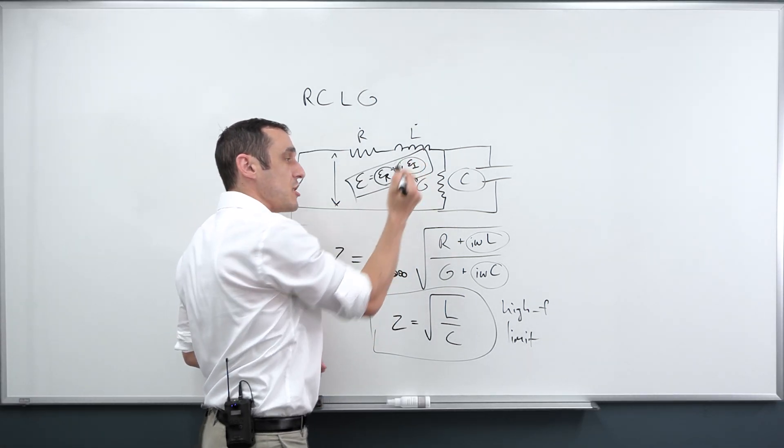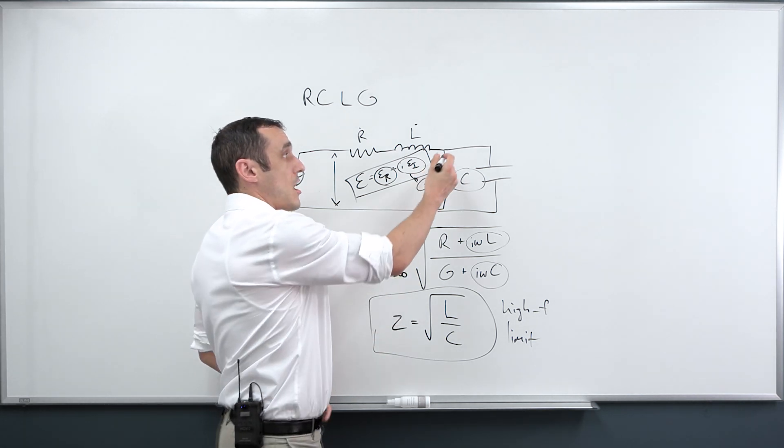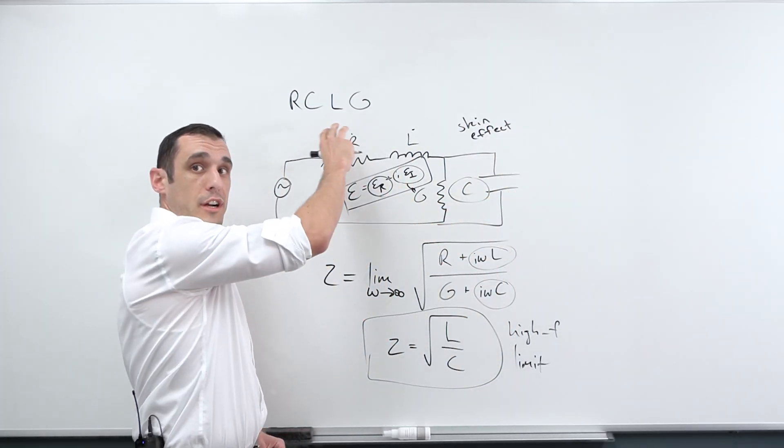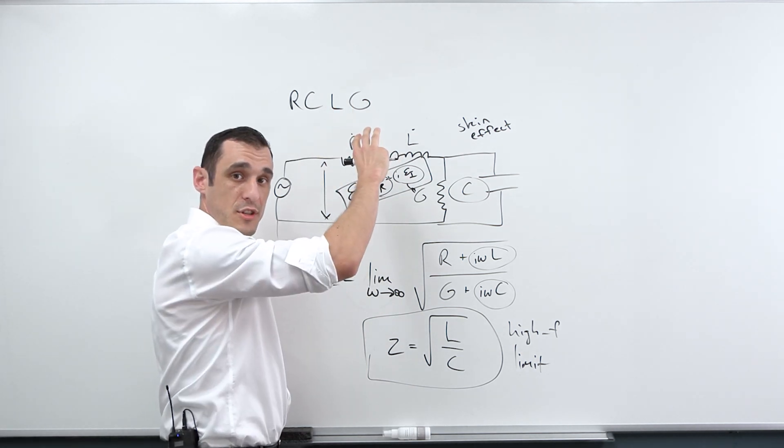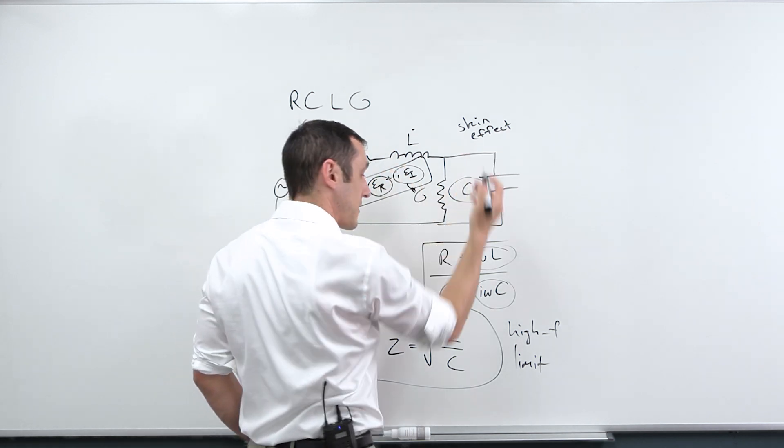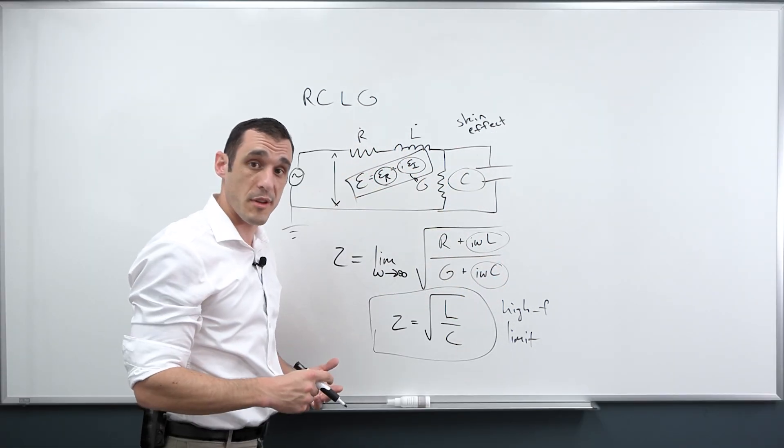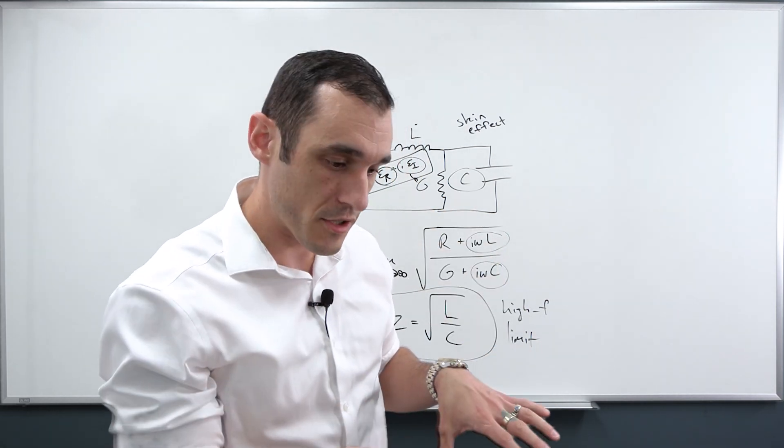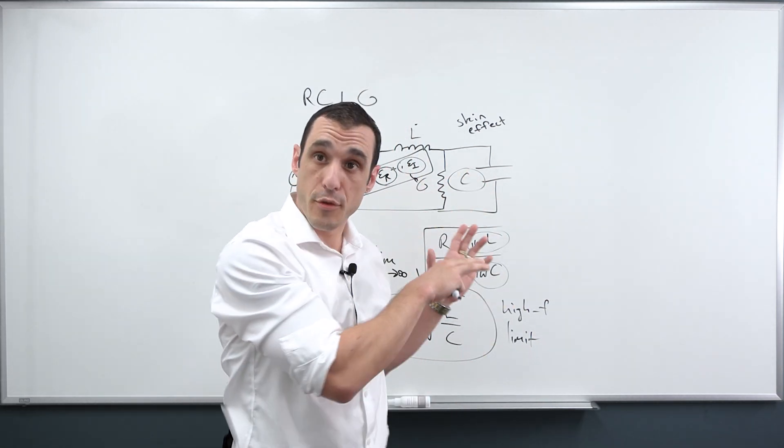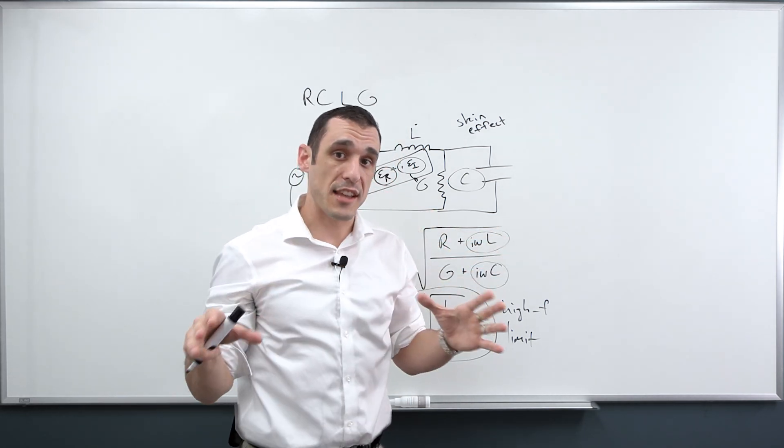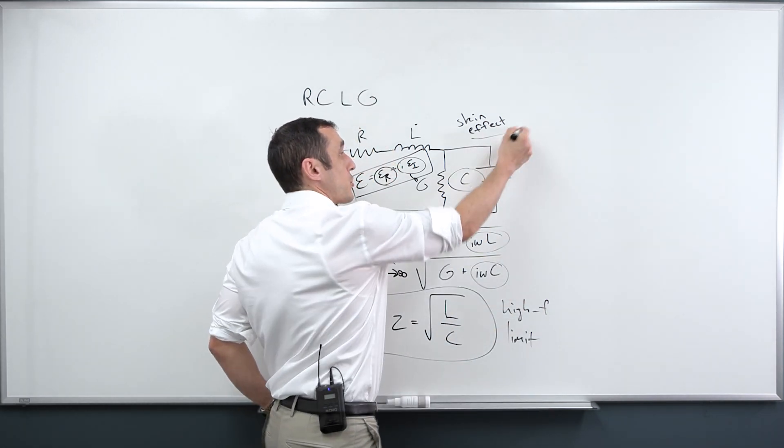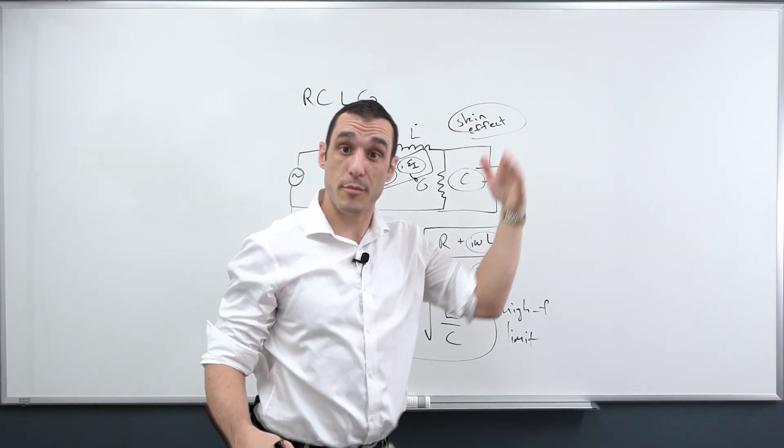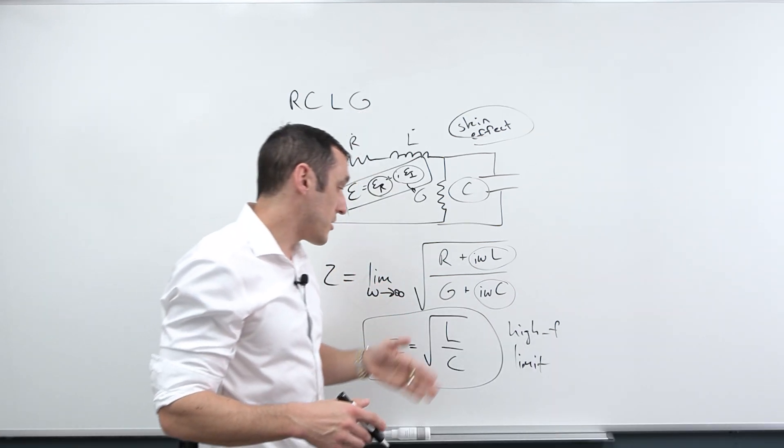Really what happens is you will have G also increasing. You have another source of loss in the transmission line that's called the skin effect. And the skin effect results when current in the transmission line bunches up around the edge of the transmission line, and it actually contributes to the impedance. So you have a skin effect that also appears here in L, and it's also frequency dependent.